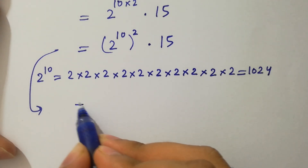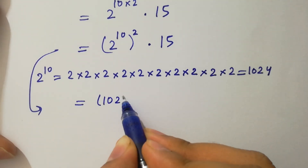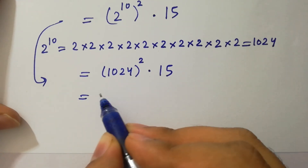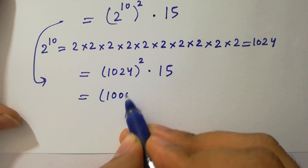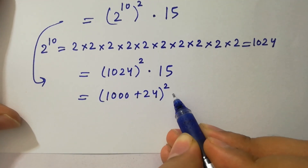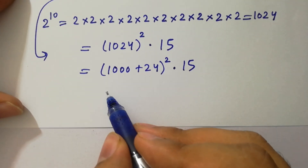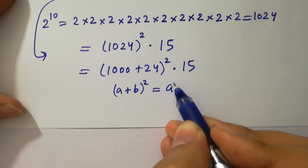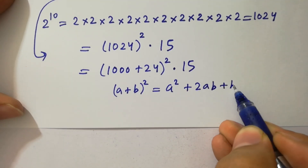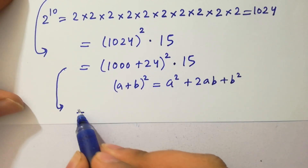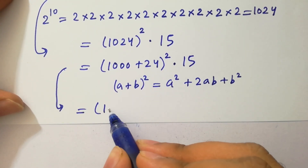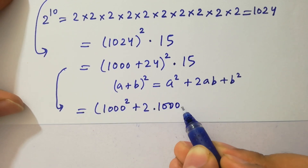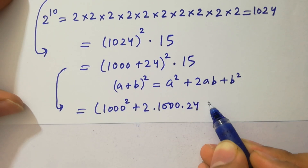So 2 to the power 10 is 1024, giving us 1024 squared times 15. Since 1024 is the same as 1000 plus 24, we apply the formula (a plus b) whole squared, which equals a squared plus 2ab plus b squared. This gives us 1000 squared plus 2 times 1000 times 24 plus 24 squared, all times 15.